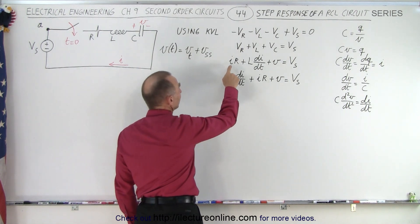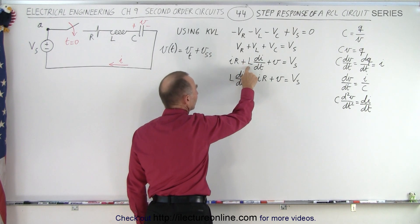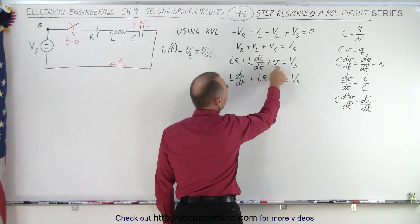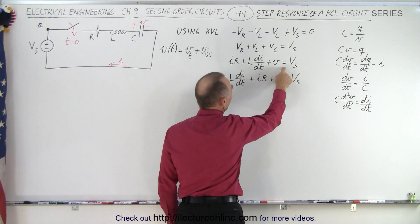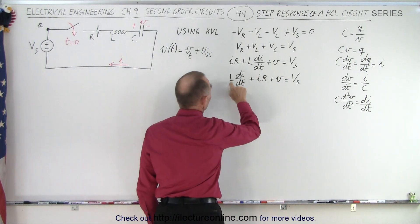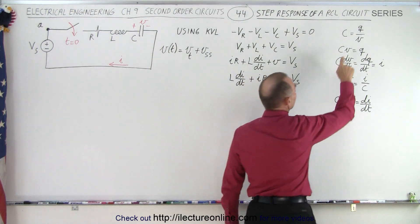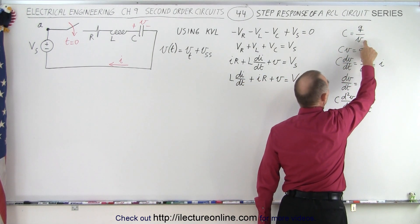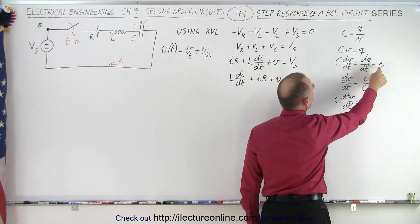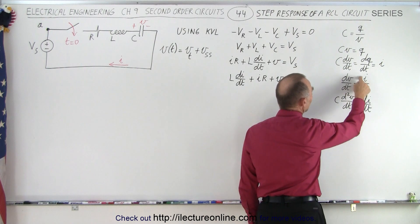The voltage across the resistor is the current multiplied by the resistance. The voltage across the inductor is the inductance times the change of current with respect to time. The voltage across the capacitor is V, and all added together equals the voltage of the source. We also need the definition of capacitance: C equals charge over voltage. Taking the derivative with respect to time on both sides gives dq/dt equals i, so i equals C dV/dt. Solving for dV/dt gives i over C.